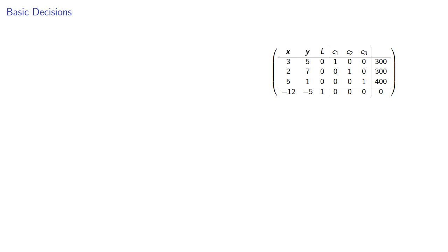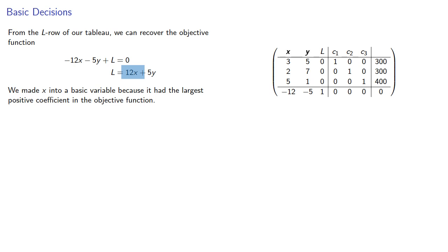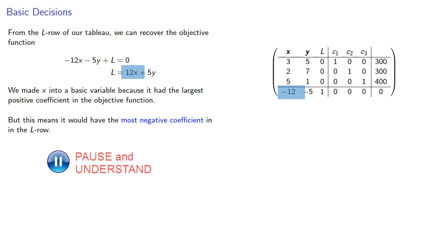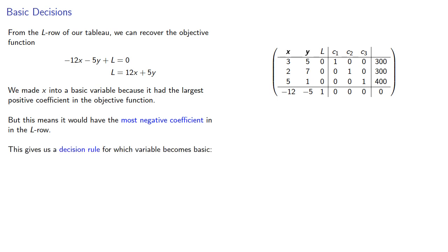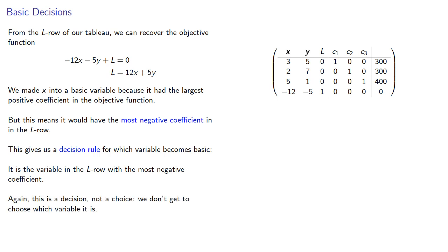Now let's think about this. From the l row of our tableau, we can recover the objective function. We made x into a basic variable because it had the largest positive coefficient in the objective function, but this means it would have the most negative coefficient in the l row. This gives us a decision rule for which variable becomes basic: it's the variable in the l row with the most negative coefficient. Again, this is a decision, not a choice — we don't get to choose which variable it is.